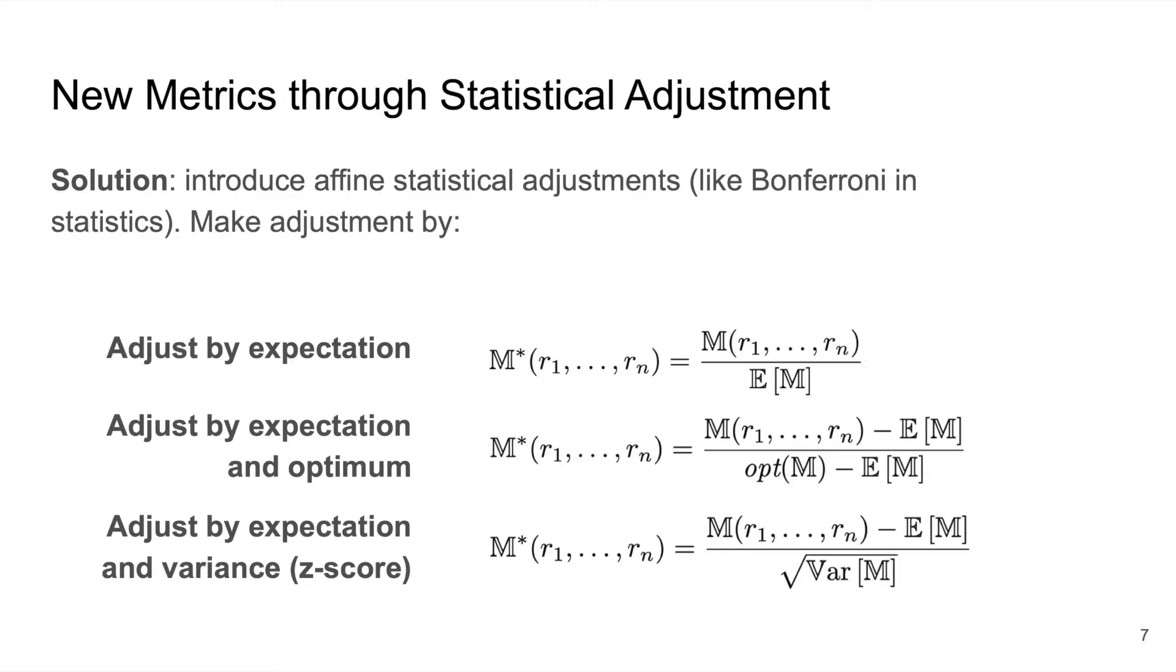So inspired by previous work from Berrendorff et al., we proposed three statistical adjustments that can be applied to all of the base rank-based evaluation metrics that change their statistical properties. And this works because we can assume that all ranks are independent and identically distributed random variables with a discrete uniform distribution. So the first adjustment normalizes the expectation to one. This isn't super applicable to metrics like the mean reciprocal rank where the range is between zero and one.